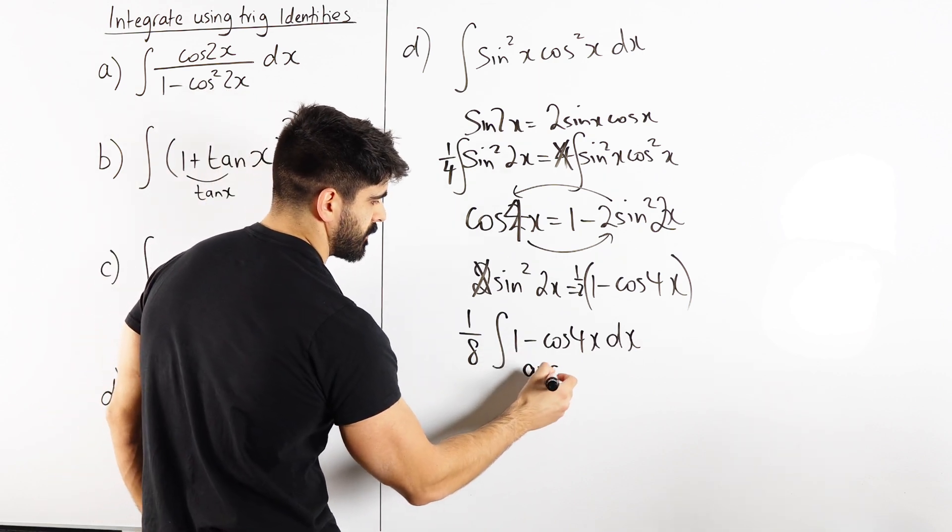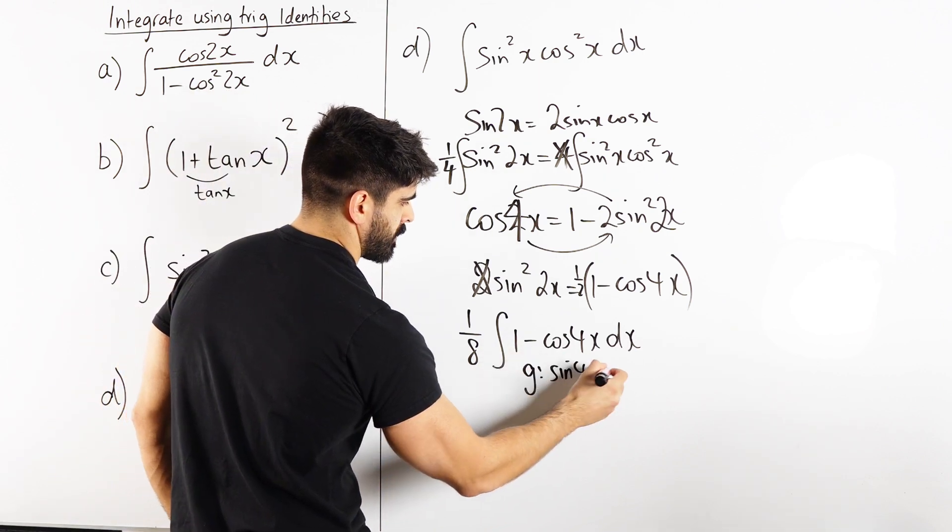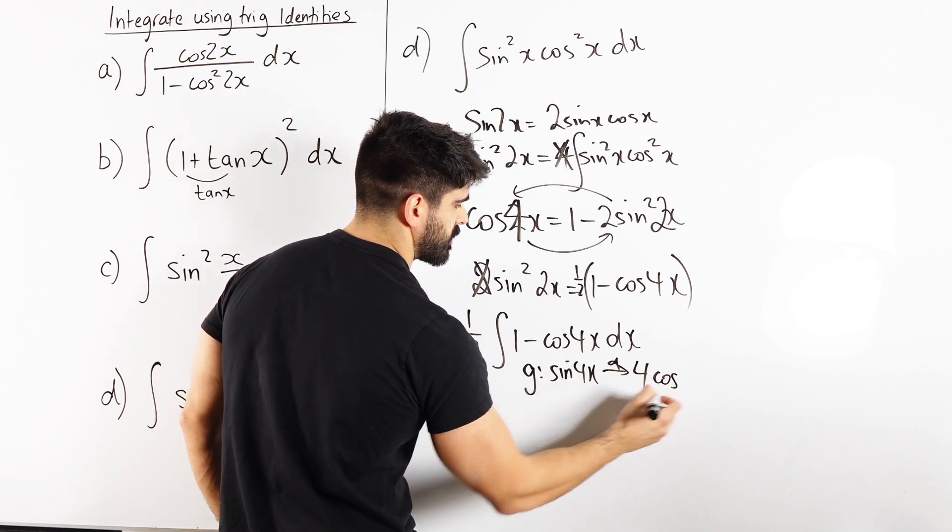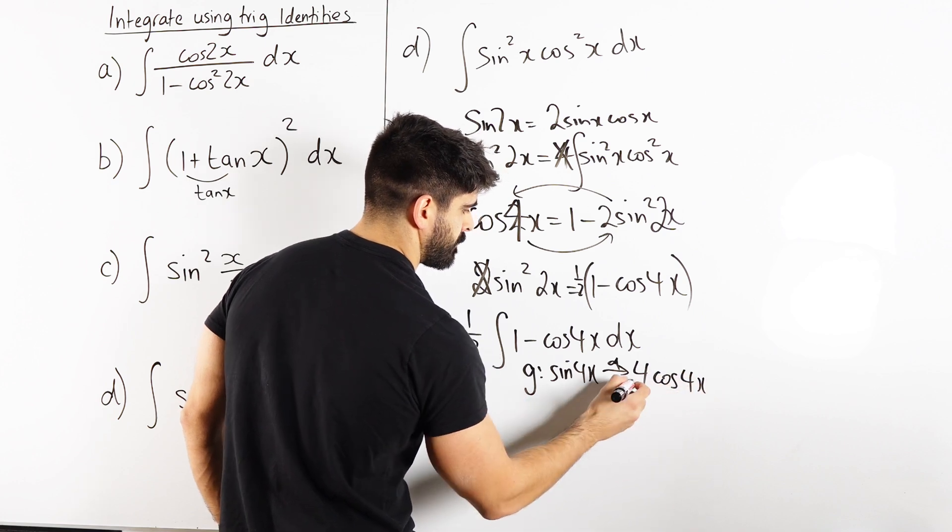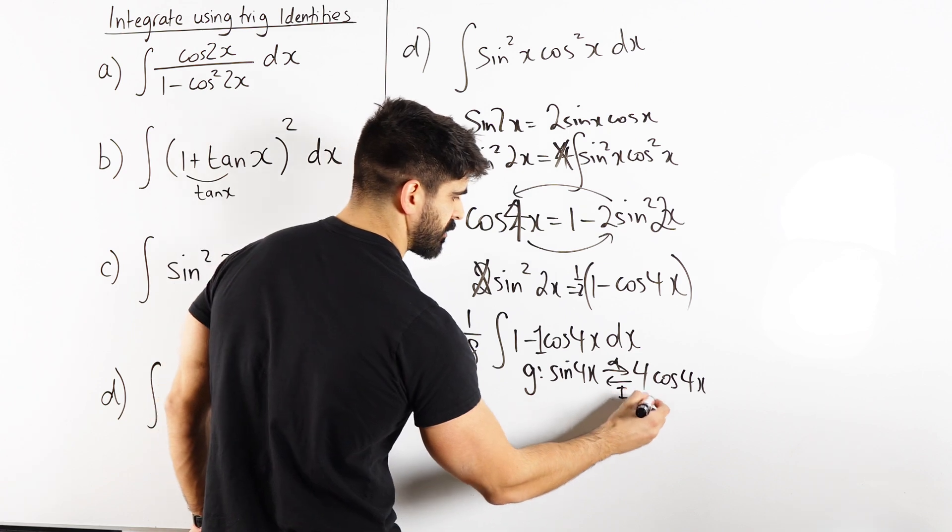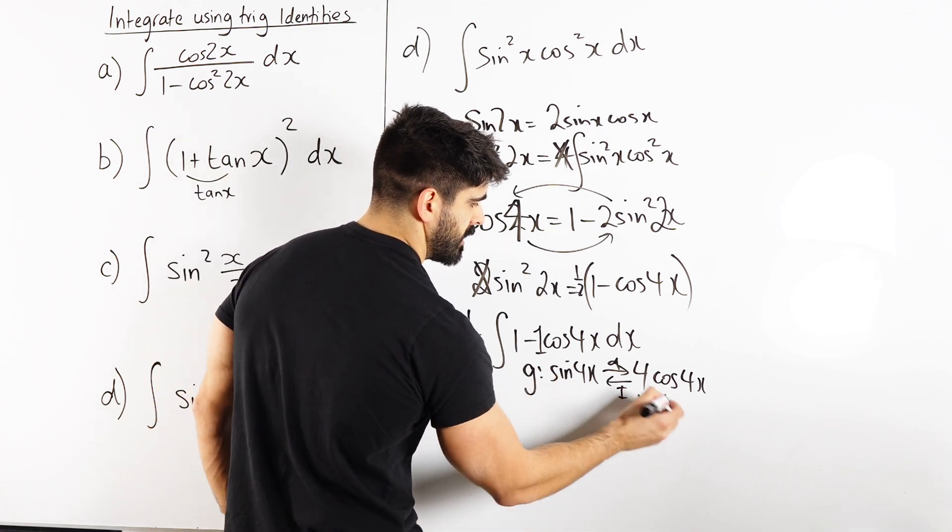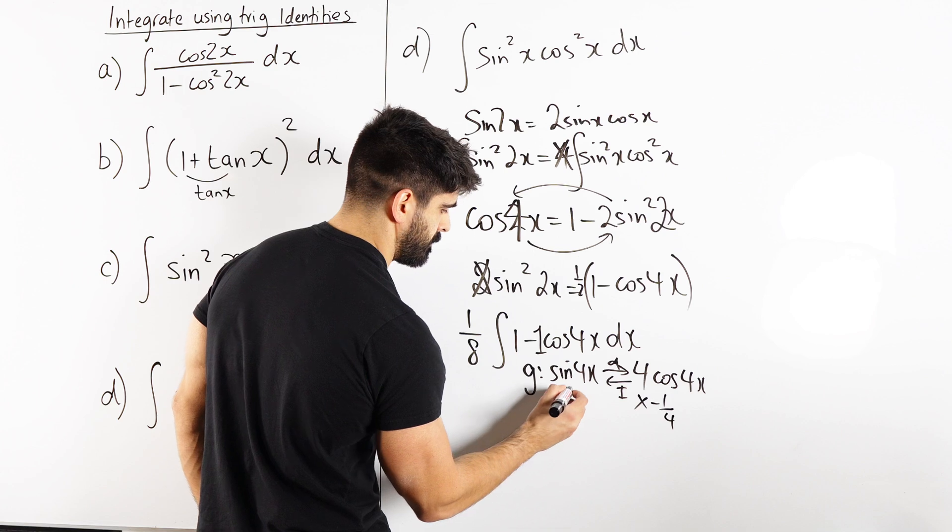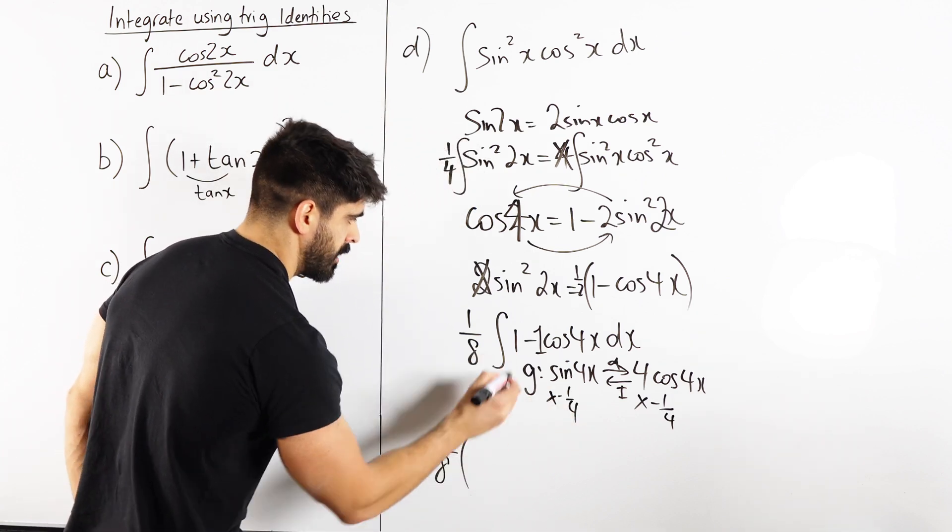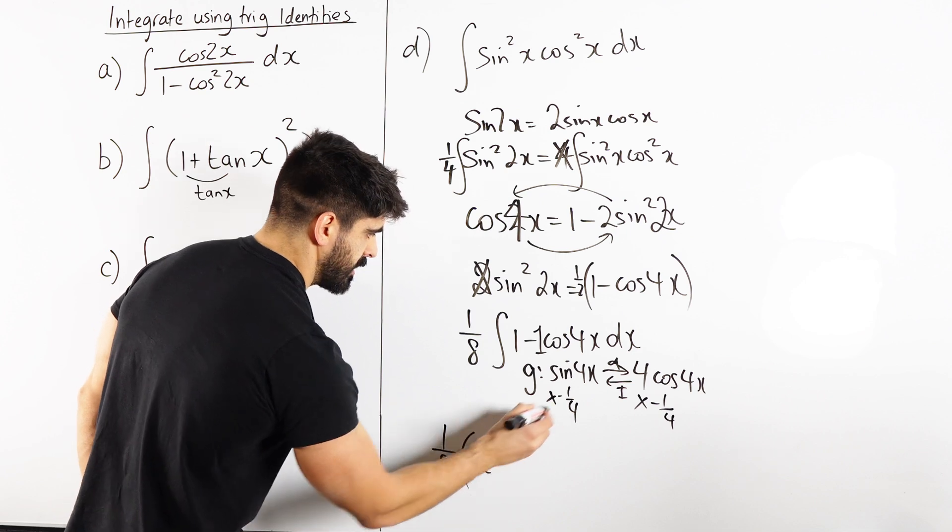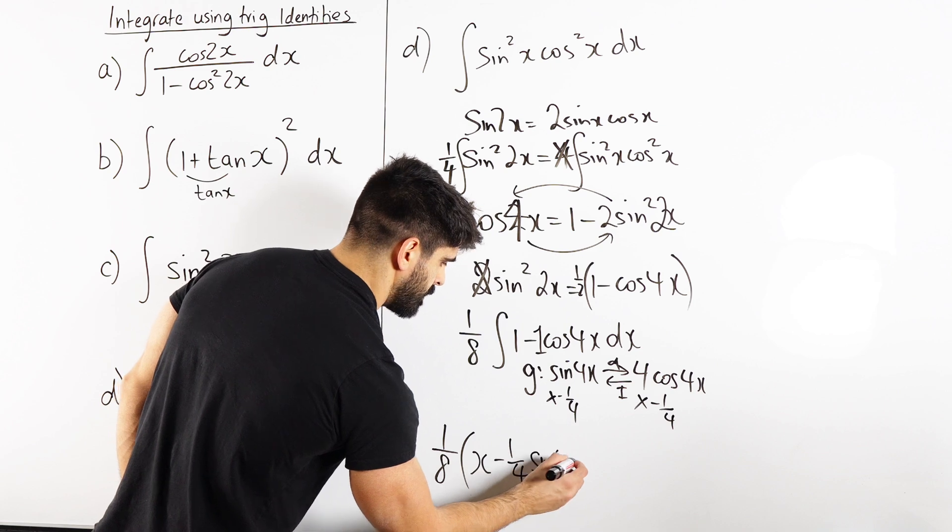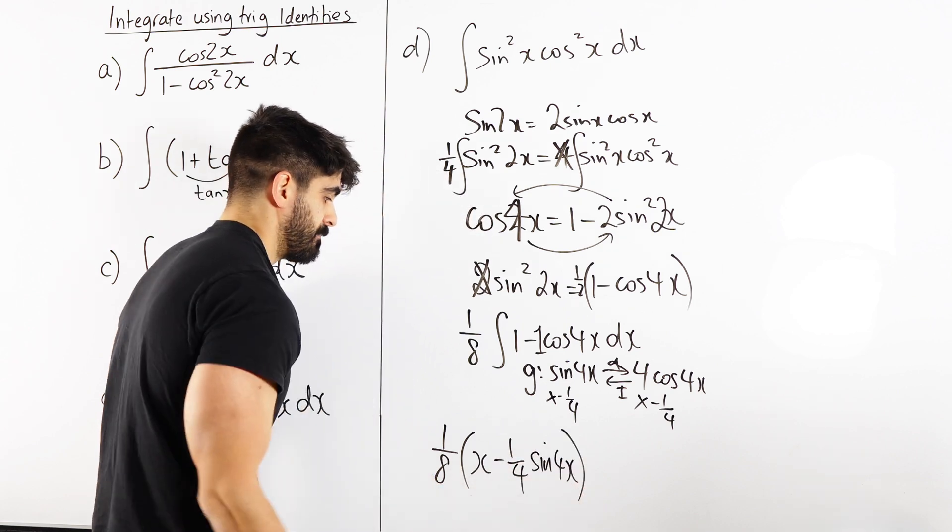We know what that integrates to here, let's make a guess of sine 4x. Sine 4x differentiates the angle, 4x differentiates to 4, sine differentiates to cos, angle stays the same. So that integrates back to that, but we want minus 1. So we times both sides by what we want, minus 1, divided by what we have. So we're left with 1/8, 1 integrates to x, then we get minus 1/4 sine 4x. Then plus c obviously.